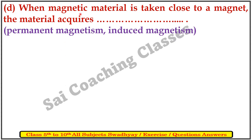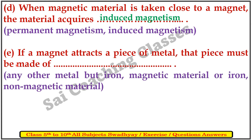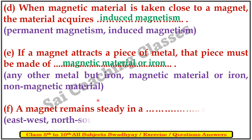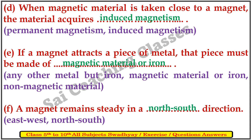D. When magnetic material is taken close to a magnet, the material acquires induced magnetism. E. If a magnet attracts a piece of metal, that piece must be made up of magnetic material such as iron. F. A magnet remains steady in a north-south direction. Answer: north-south.